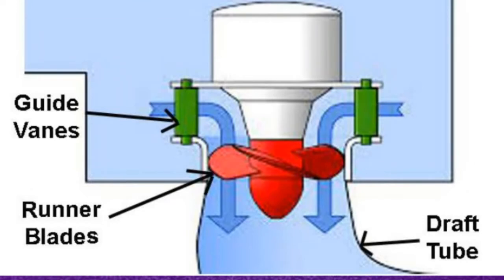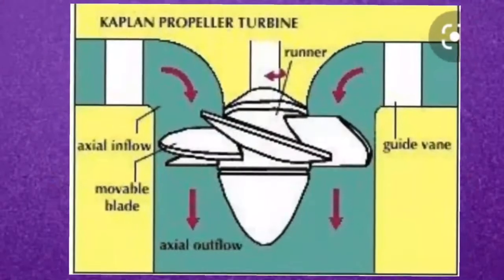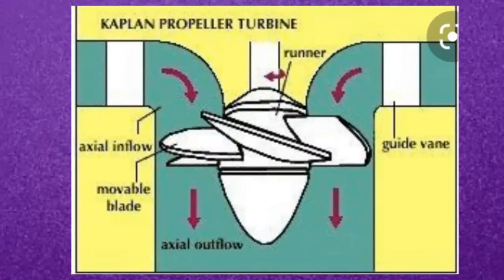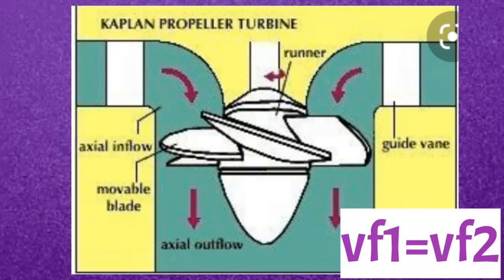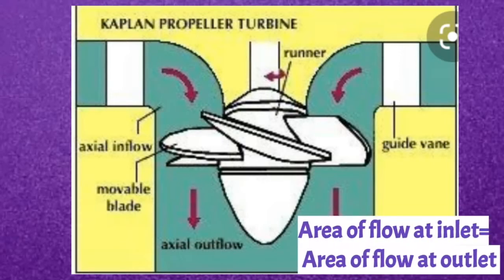There are some important conditions for the Kaplan turbine. First, the peripheral velocity at inlet and outlet are equal, meaning u1 = u2. Second, the velocity of flow at inlet and outlet are equal, meaning vf1 = vf2. Third, the area of flow at inlet is also equal to the area of flow at outlet.